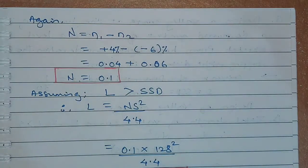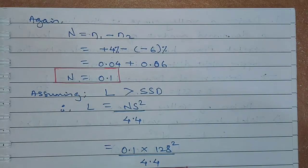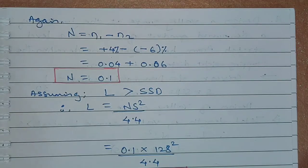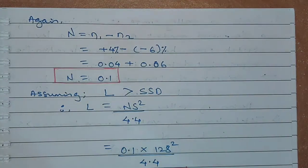Now if we assume that the length of the summit curve is greater than the stopping sight distance, then using the formula L equals S square upon 4.4 and substituting the values as angle of deviation N equals 0.1 and stopping sight distance S as 128 square divided by 4.4, we get the length of the summit curve as 372.36 meters.